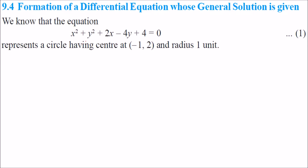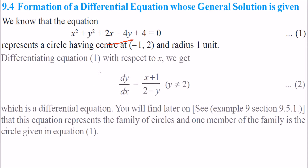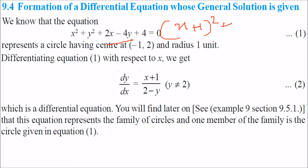Now, formation of a differential equation whose general solution is given. We have this equation. This is just a circle — the circle like this: x plus 1 whole square plus y minus 2 whole square equal to r square. If you expand it, you will get this equation only.